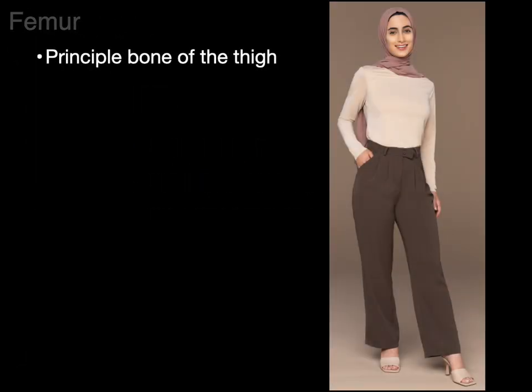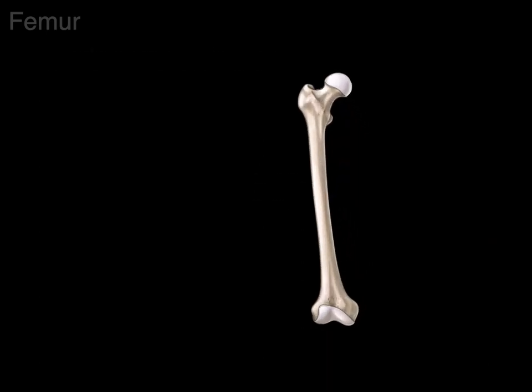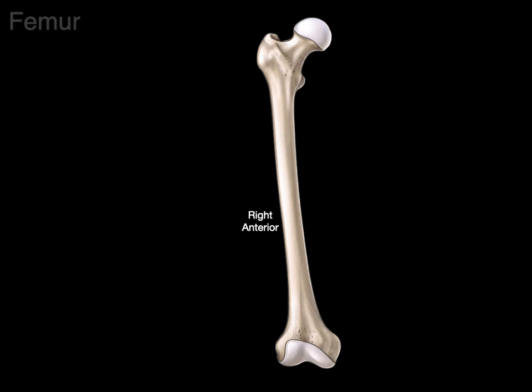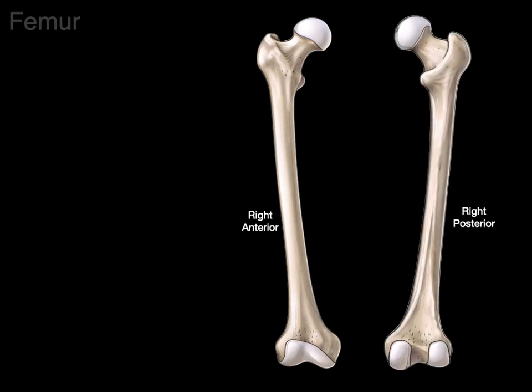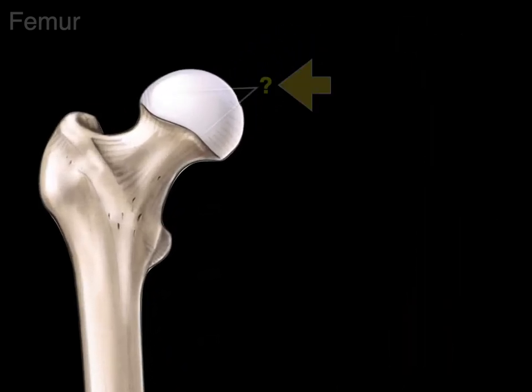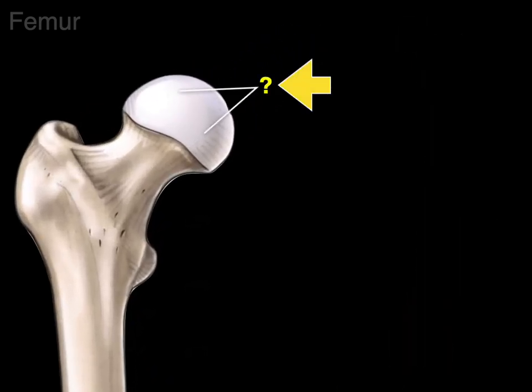To begin, the femur is the principal bone of the thigh — there's the femur, and in Latin that means thigh, hence the name. We're going to learn about parts of the femur shown on this anterior view and posterior view of the femur on the right side. To begin with, this proximal dome-shaped structure is called the head of the femur.